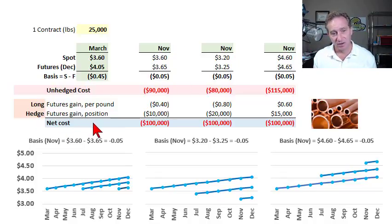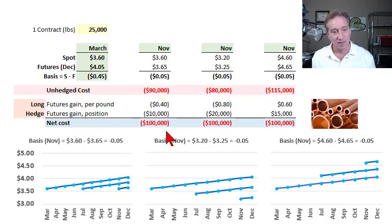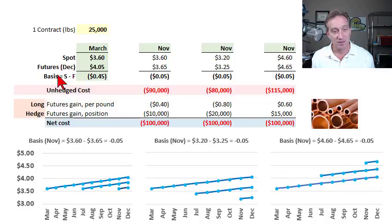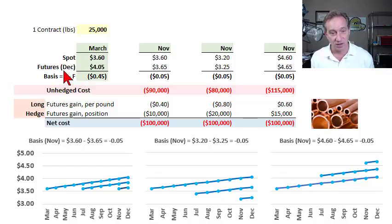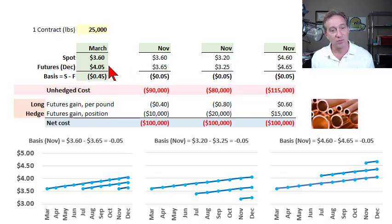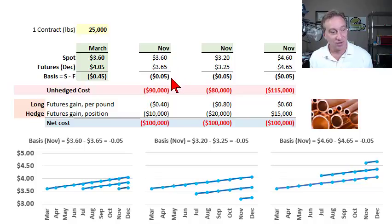What we have here are the net costs under a long hedge. If we have a plan to purchase a commodity in the future, the appropriate hedge is a long hedge — called that because we take a long position in the futures contract, a promise to purchase the commodity at a predetermined price. I'm assuming a December futures contract, set a little after our planned November purchase so we can close out the contract rather than take delivery. Over 90% of futures contracts are closed out on a cash settlement basis.